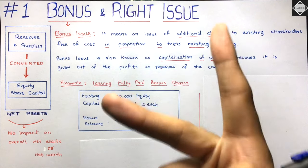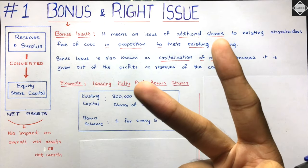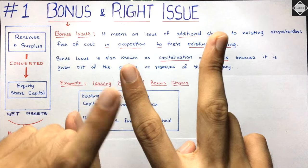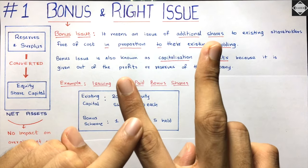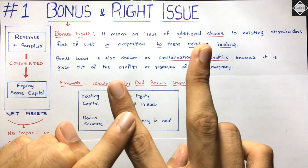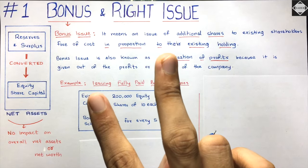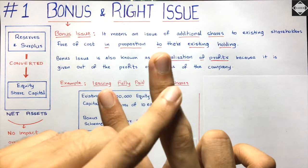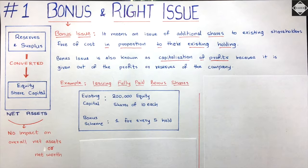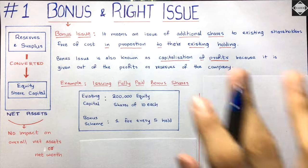There are two types of bonus issue. The first, most common one, is issuing fully paid-up bonus shares to existing shareholders for free. The second is making a bonus call - converting partly paid-up shares into fully paid-up. We'll have a detailed discussion on both.